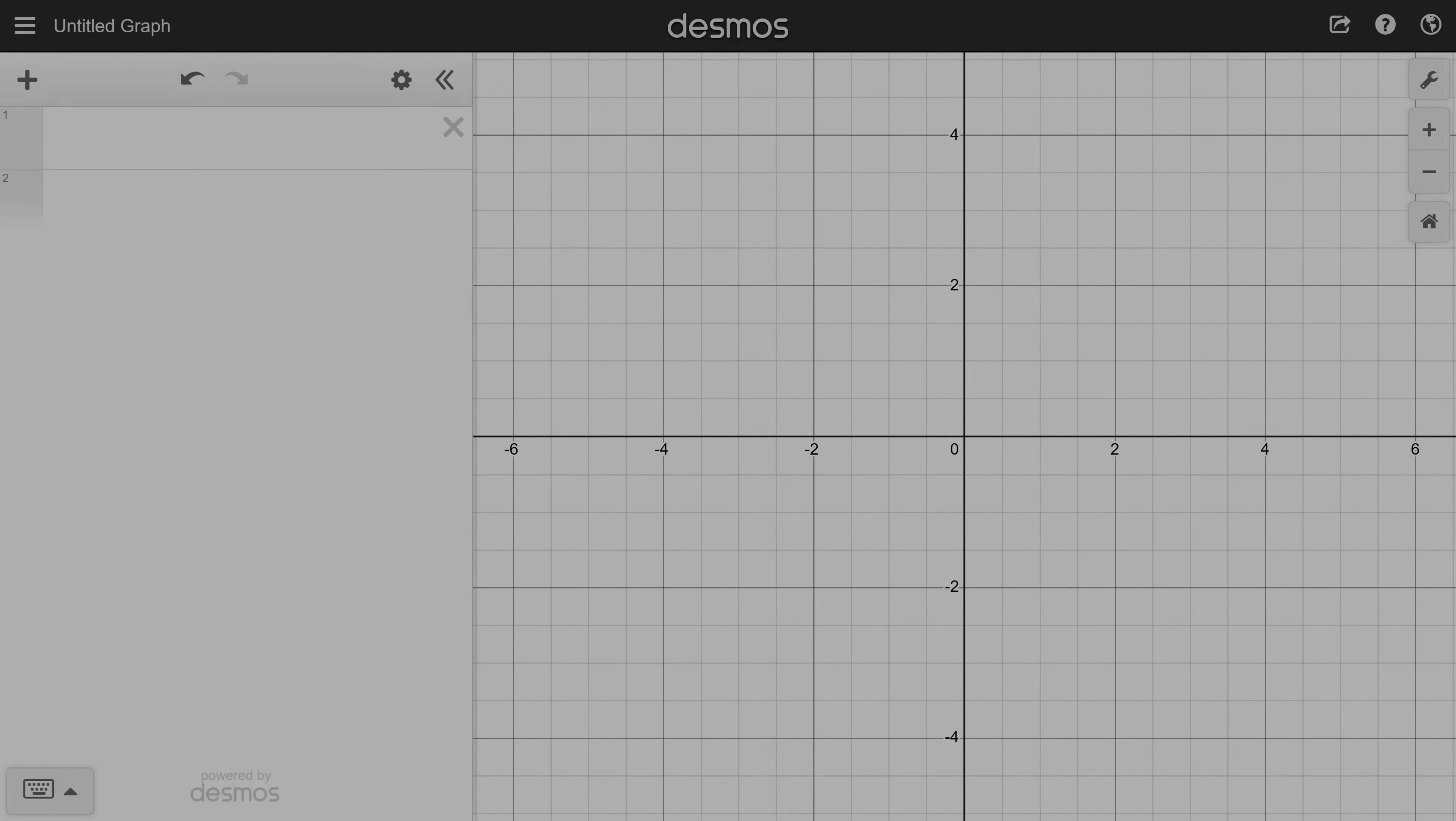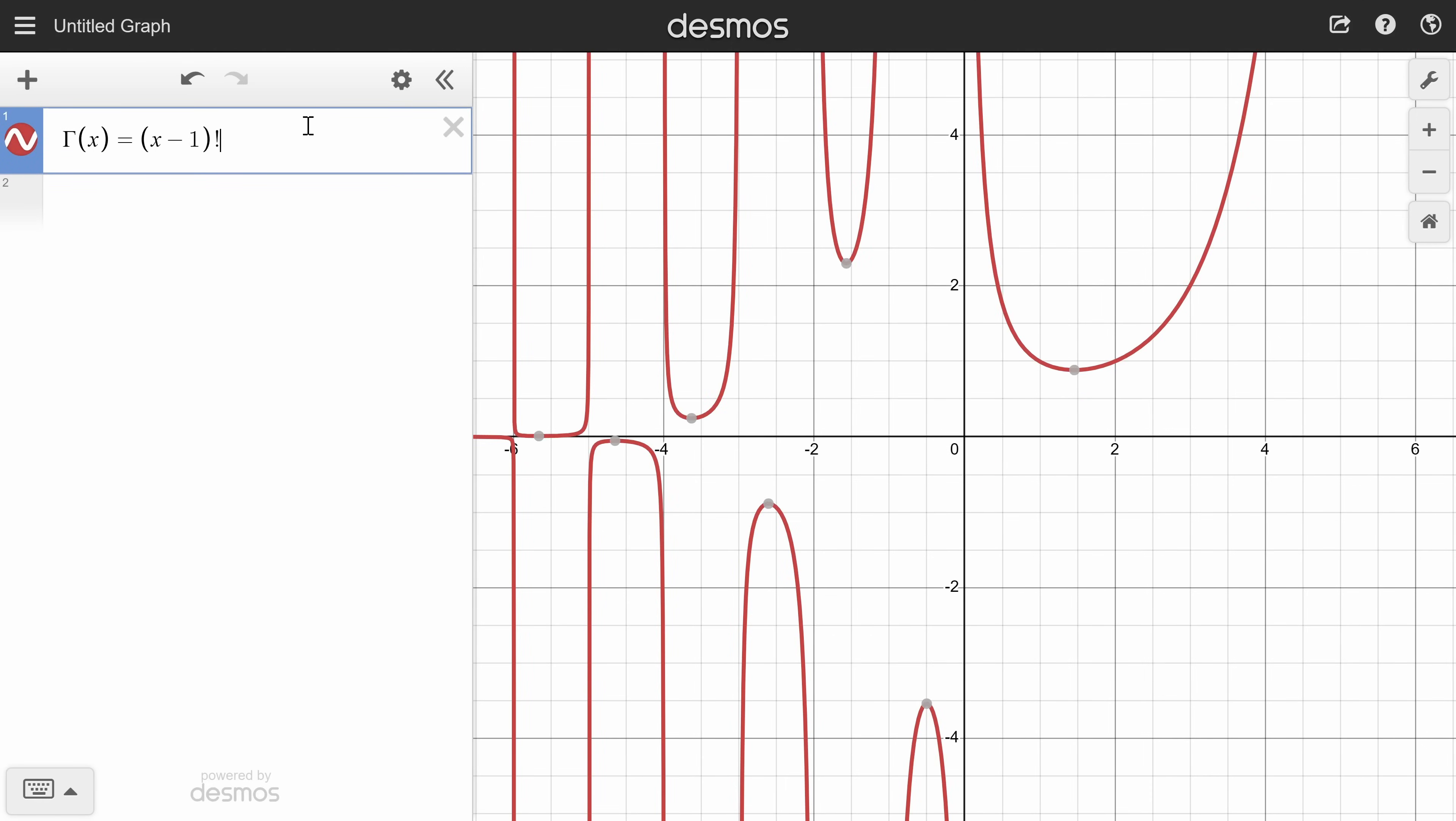Now let's move on to the gamma function. I'm going to use desmos because the fancy animations just didn't have the same magic as watching an actual calculator do this one for real. Since the calculator has built-in support for fractional factorials, I can just define the gamma function as x minus 1 factorial. Note that the gamma function has a vertical asymptote at every non-positive integer.